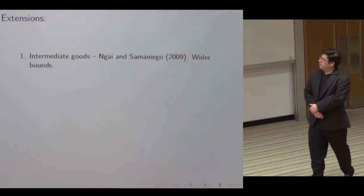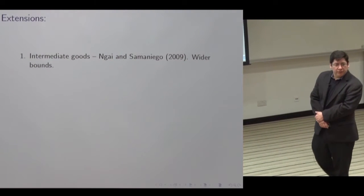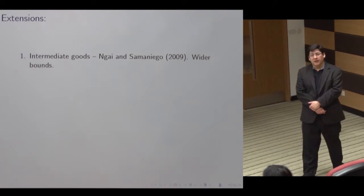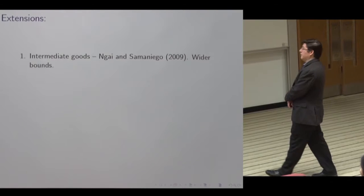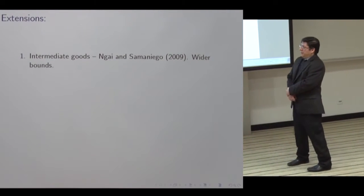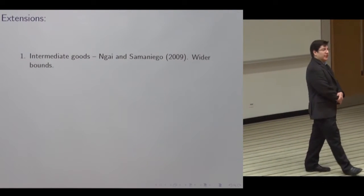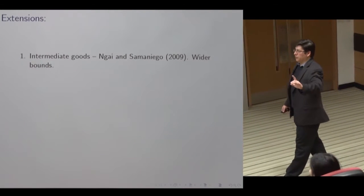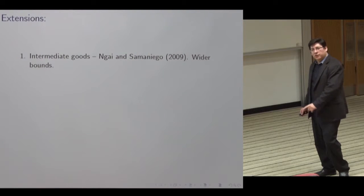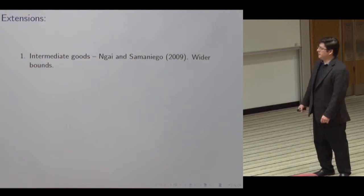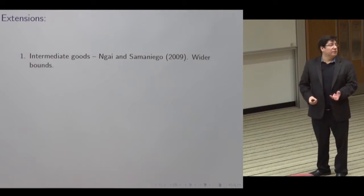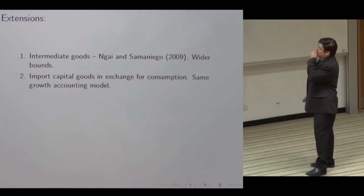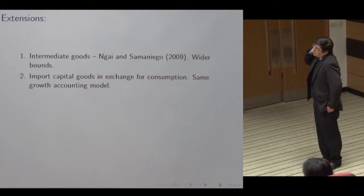We're going to have a third measure of the contribution, because there is work by Rachel and co-author suggesting that if you extend these models to explicitly allow for input-output linkages between the capital goods producing sector and the consumption goods producing sector, you may get a larger contribution. ISTC might contribute to the production of consumer goods which use the output of the capital goods sector as an intermediate — so ISTC not only makes capital cheaper, it also makes inputs cheaper. That's going to widen our bounds a little bit.